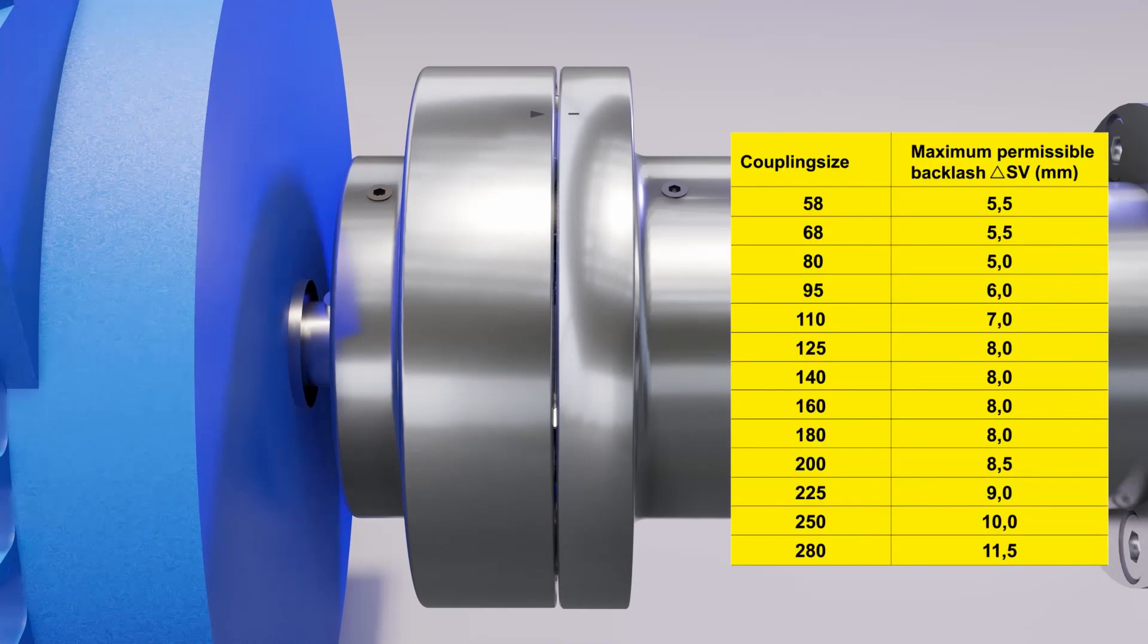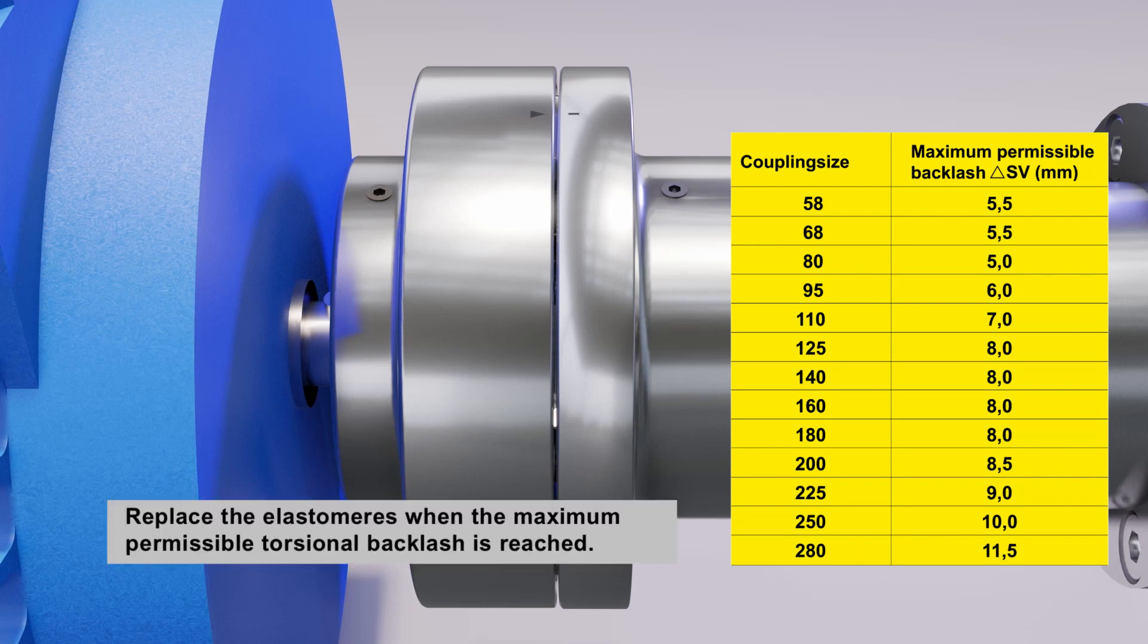The maximum permissible torsional backlash can be found in the table shown. Replace the elastomers when the maximum permissible torsional backlash is reached.